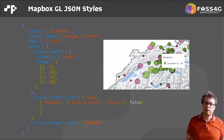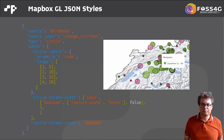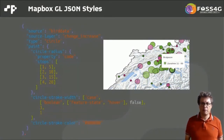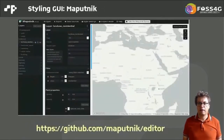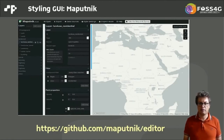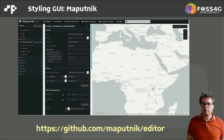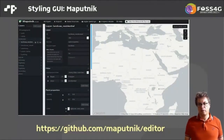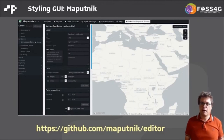You can also have interactive hover functionality, and can do dynamic things. It's quite a readable language but many people prefer a graphical interface. There is Maputnik, a graphical interface for MapBox JSON styles that helps with selecting colors, gives you a preview, and makes it easier to create or adapt a style.